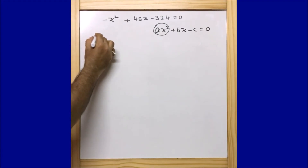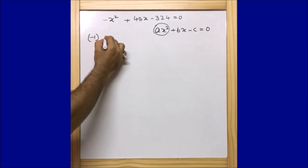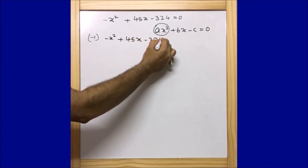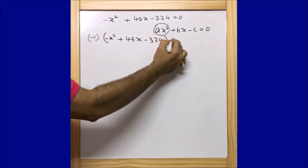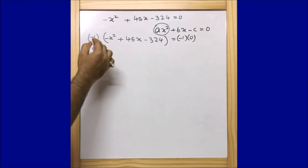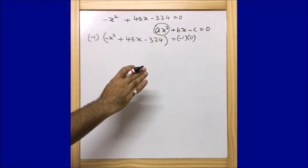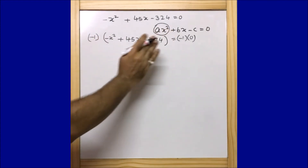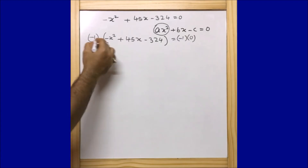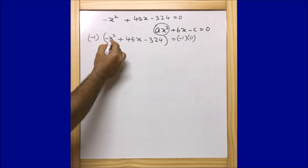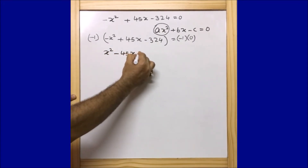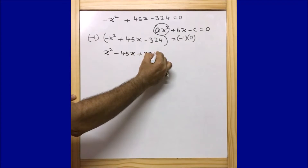So I write: minus 1 times (minus x squared plus 45x minus 324) equals minus 1 times 0. If I multiply minus 1 on both sides, nothing changes since we are doing the same thing to both sides. Solving this gives: x squared minus 45x plus 324 equals 0.